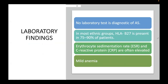For laboratory findings: there is no specific or pathognomonic laboratory test diagnostic of ankylosing spondylitis. However, there is a very strong association with HLA-B27 (75–90% of AS patients). ESR and C-reactive protein are often elevated but are non-specific markers of inflammation. Mild anemia may be reported, but again, nothing specific is diagnostic.